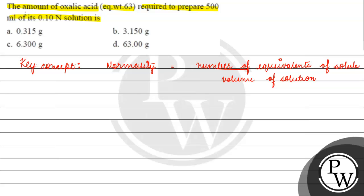If we talk about it, what is solute? Oxalic acid. We have the equivalent weight given. Now, we have the normality given. How much is normality? 0.10.